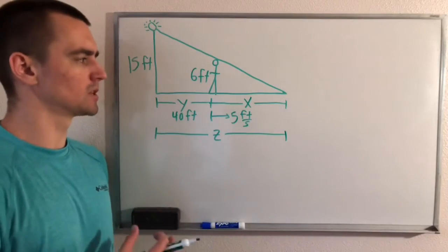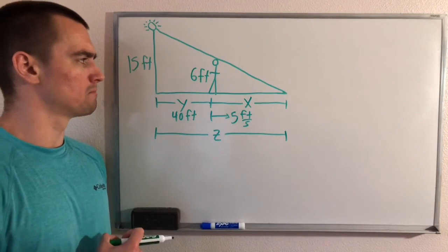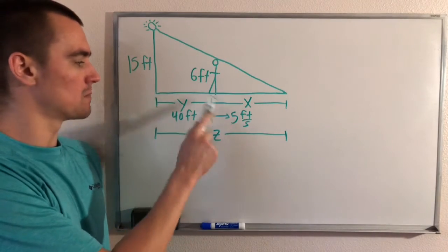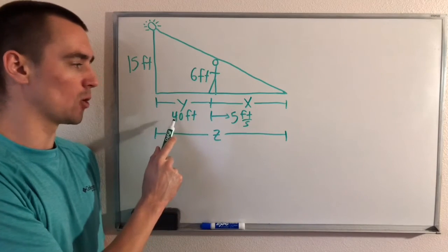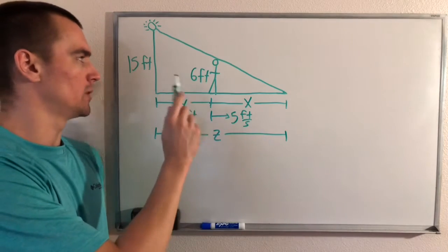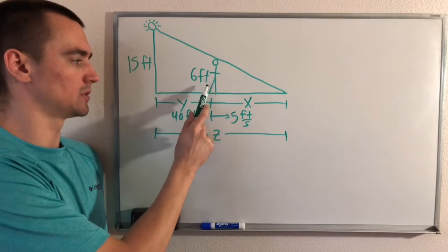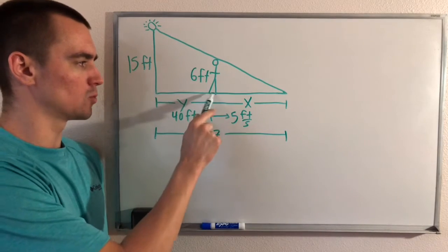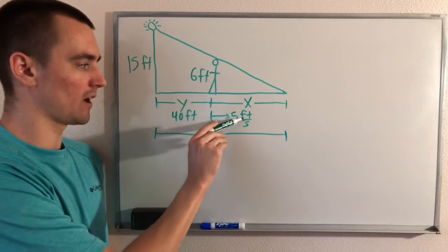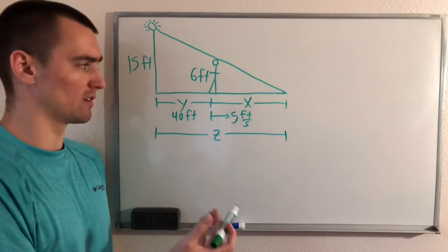This pretty much sums up all the information we're given. We have this man — at the moment we're looking at, he's 40 feet away from the pole. We know the pole is 15 feet tall, the man is 6 feet tall, and we know the man is walking away from the pole at a speed of 5 feet per second.